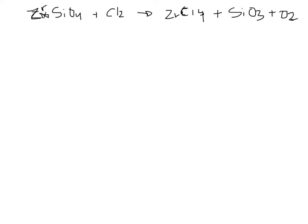What mass of zirconium-4-chloride can be produced? So have they given you a given or a question? That's a question. So right now we know that our question is how many grams of that stuff can be produced. If 982 grams of zirconium orthosilicate...